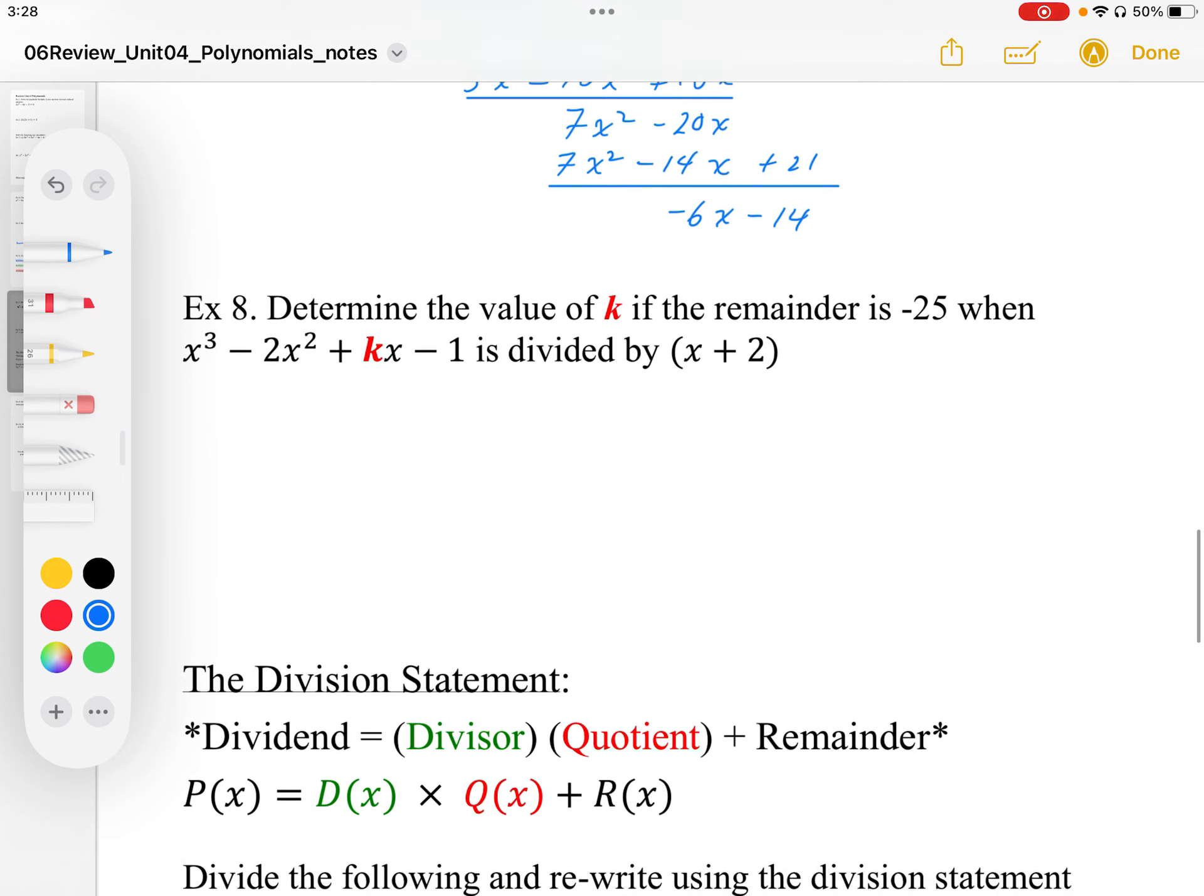For example 8, we're just going to apply the remainder theorem. So we have a remainder of negative 25. So when we plug in x equals negative 2, we know that p of negative 2 is equal to negative 25. And when we plug that into our expression, so negative 2 cubed minus 2 times negative 2 squared plus k times negative 2 minus 1, we now have our equation which we can solve for k.